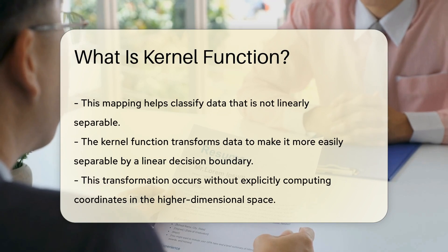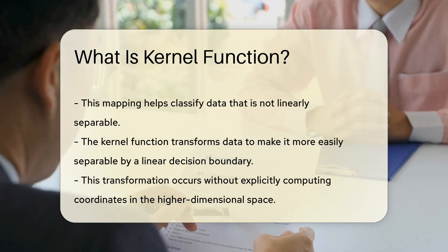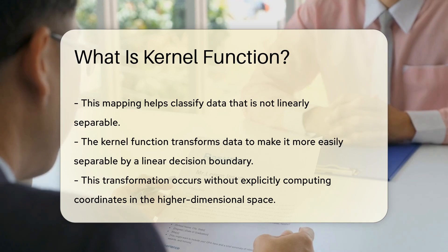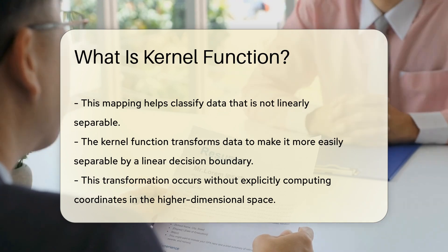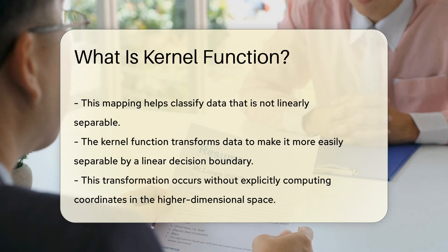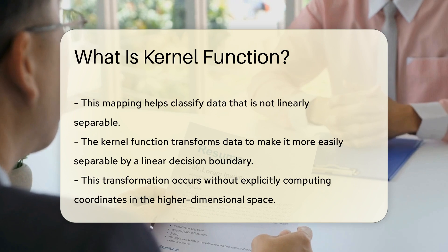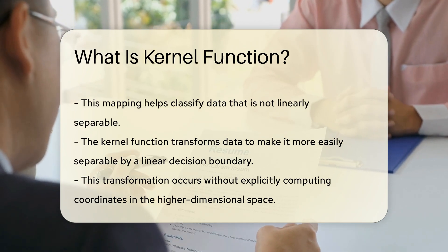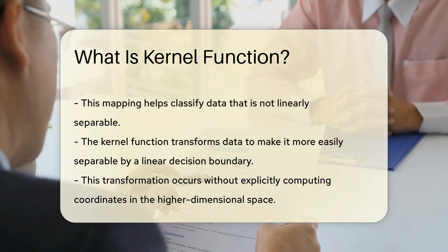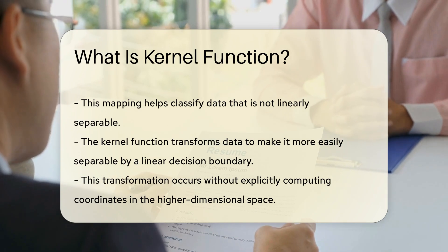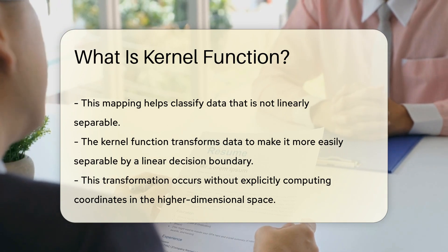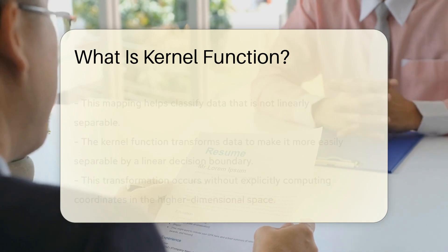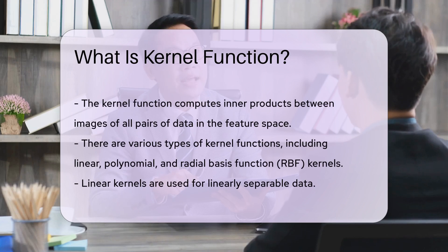In simpler terms, a kernel function transforms data into a form where it can be more easily separated by a linear decision boundary. This transformation is done without explicitly computing the coordinates in the higher dimensional space. Instead, the kernel function computes the inner products between the images of all pairs of data in the feature space.